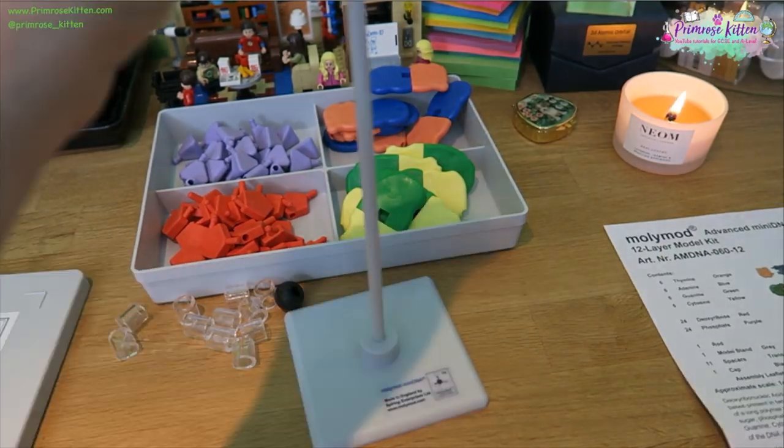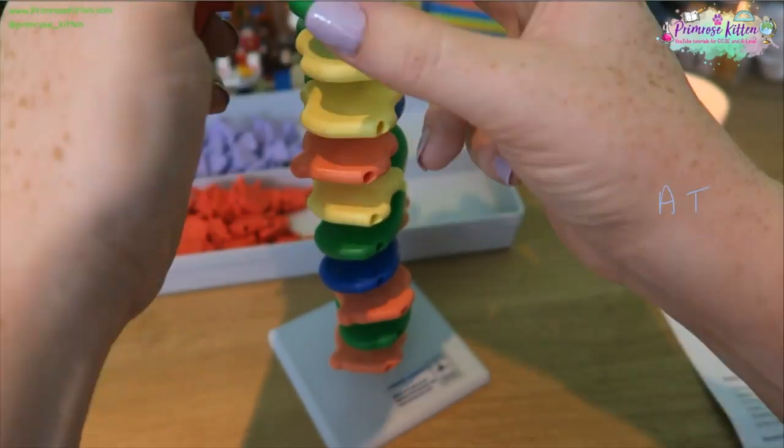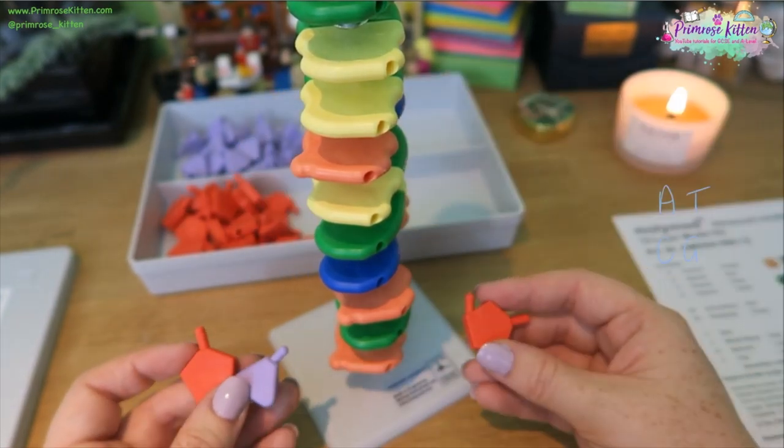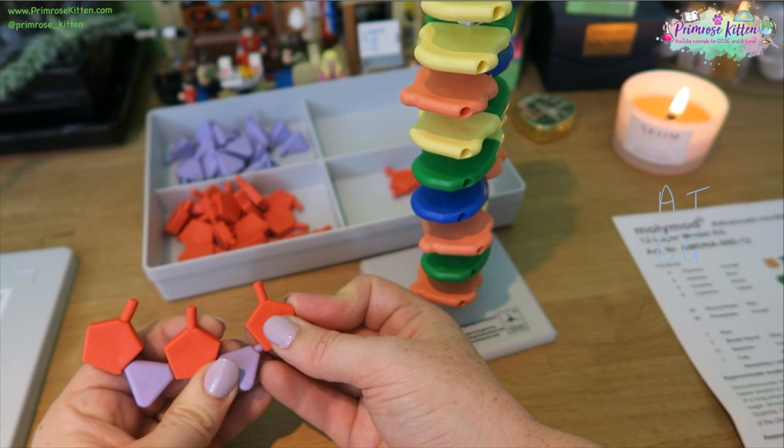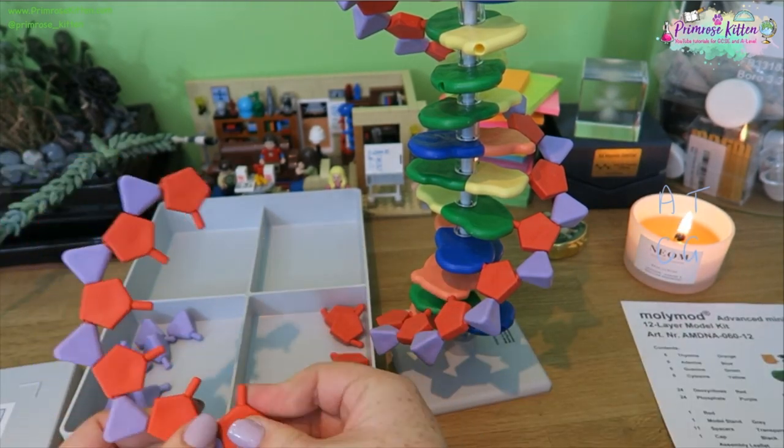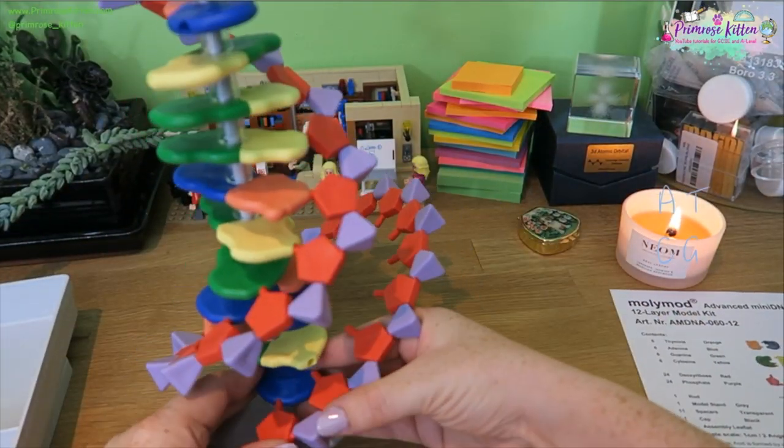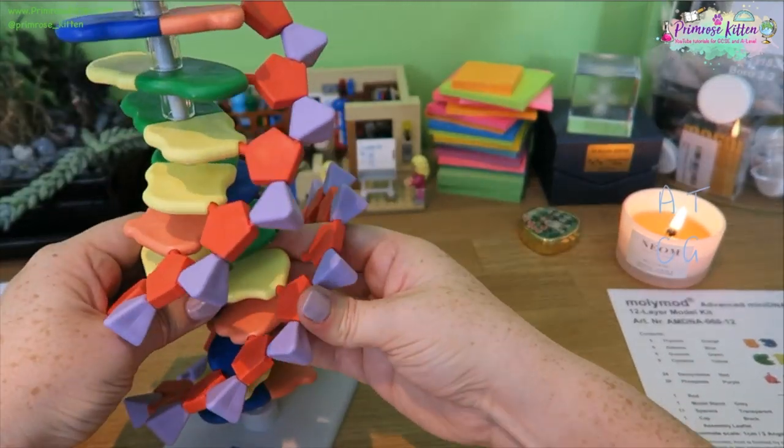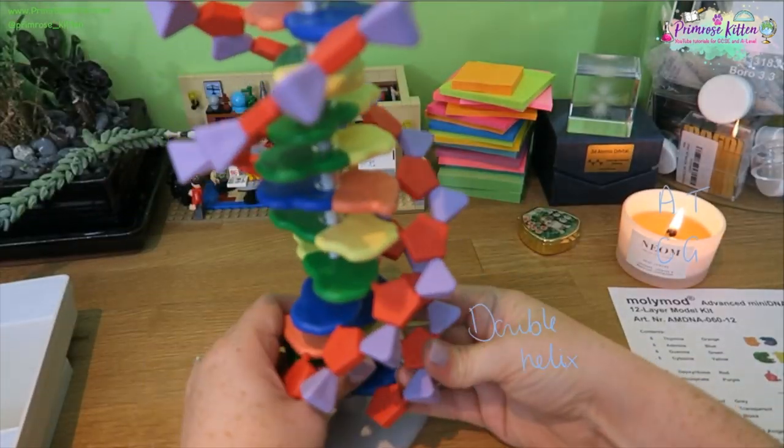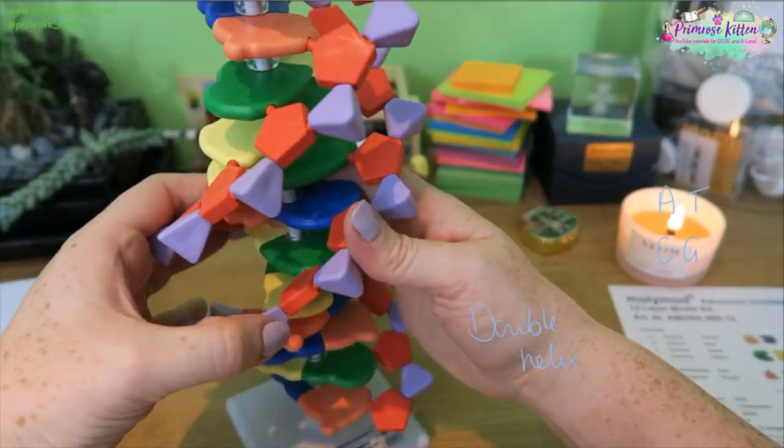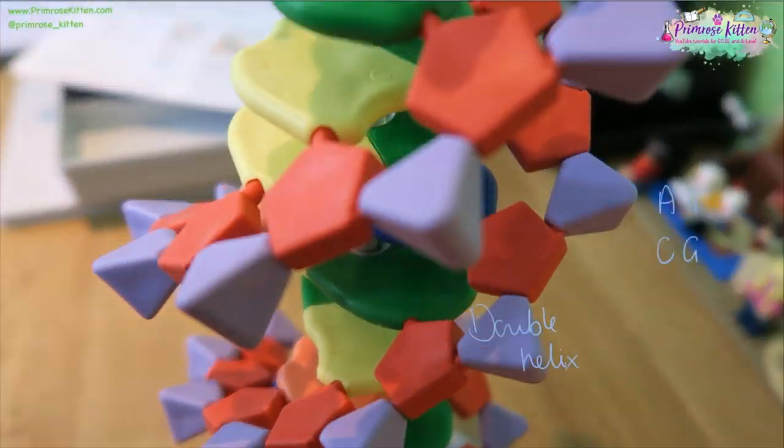DNA is made from different bases that fit together. So we are always going to have A connecting to T, and we are always going to have C connecting to G. This is always going to be the case. It has a sugar phosphate backbone, and there are two of those which stretch all the way around the outside. It is a double helix. You will see that the green is always connected to the yellow, A to T, C to G. The blue is always connected to the orange, and it is going round in a helical or a double helical structure.